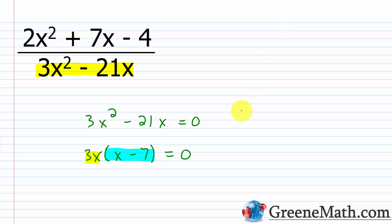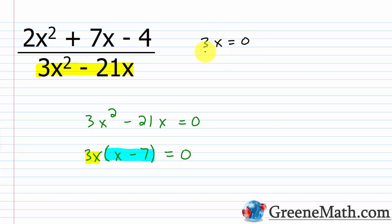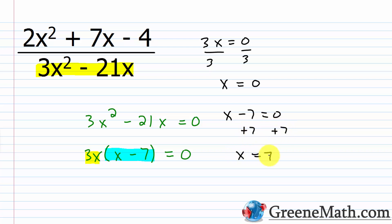This works because of the zero product property. If A times B equals 0, then at least one of these must be true: A = 0, B = 0, or both. Multiplying by zero gives zero, so it could be that A is 0 and B is not, B is 0 and A is not, or both are 0. Setting 3x = 0 and dividing both sides by 3 gives x = 0. Setting x − 7 = 0 and adding 7 gives x = 7. So we have two solutions and thus two values to restrict from our domain.